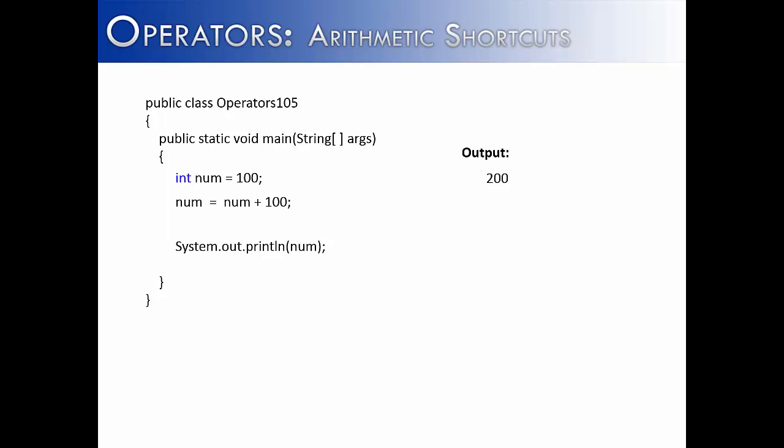But hopefully you can see that there's some redundancy here, in that num is in the expression twice. We could take num out once and write a statement like this: num equals plus 100. But if we try to run this right now, this is using a shortcut, but the shortcut is written incorrectly.